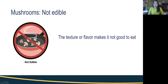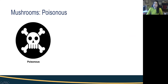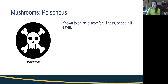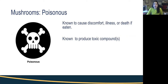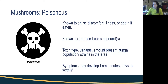The symbols used throughout the webinar: one symbol means the texture or flavor makes a mushroom not good to eat. Another means toxicity is unknown with no information on toxic compounds. A poison symbol means the mushroom is known to be poisonous — known to cause discomfort, illness, or death. The toxin type, variant, and amount present on each specimen will vary depending on the fungal population and strains in the area. Poisoning symptoms may develop within minutes, days, or weeks, so be very careful.